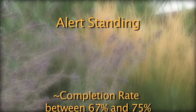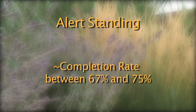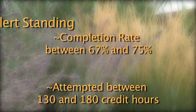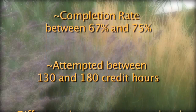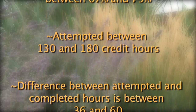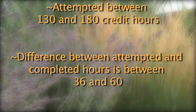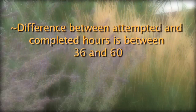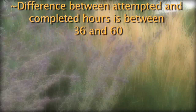The next is alert standing. You will be placed on alert standing, which will not affect your financial aid disbursement, if you have completed at least 67% of the credit hours you have attempted but your pace of progression is less than 75%, if you have attempted between 130 and 180 cumulative credit hours including transfer credits, or if you have not completed between 36 and 60 of the credits you have attempted.